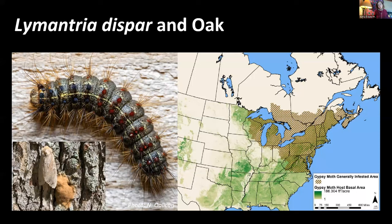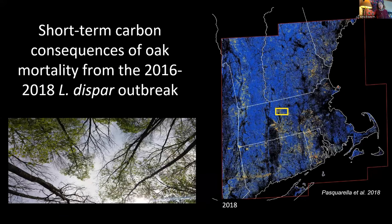I'll first talk about Lymantria dispar and oak. Lymantria dispar was introduced in 1869 right here in Medford; it's still expanding its range west and south and is well established in New England. Since the late 1800s it has had periodic outbreaks causing major defoliation. Oak is its major host, and oaks can typically tolerate one to two years of defoliation, but more intense or frequent defoliations can cause mortality. From 2016 to 2018, southern New England had the worst Lymantria dispar outbreak in nearly 30 years, shown here by satellite defoliation estimates.